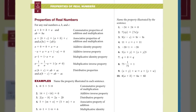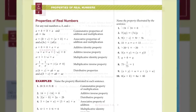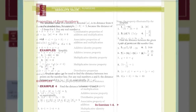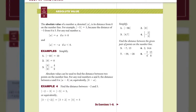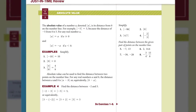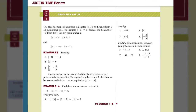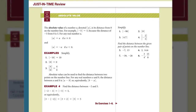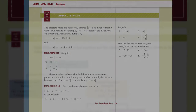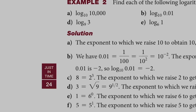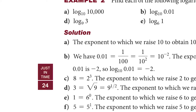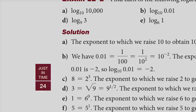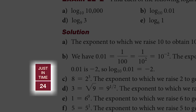Each topic contains a few examples and a brief exercise set. All answers, even and odd, are included in the answer section at the back of the text. Just-in-time icons are positioned throughout the text next to the example where review of an intermediate algebra topic would be helpful.